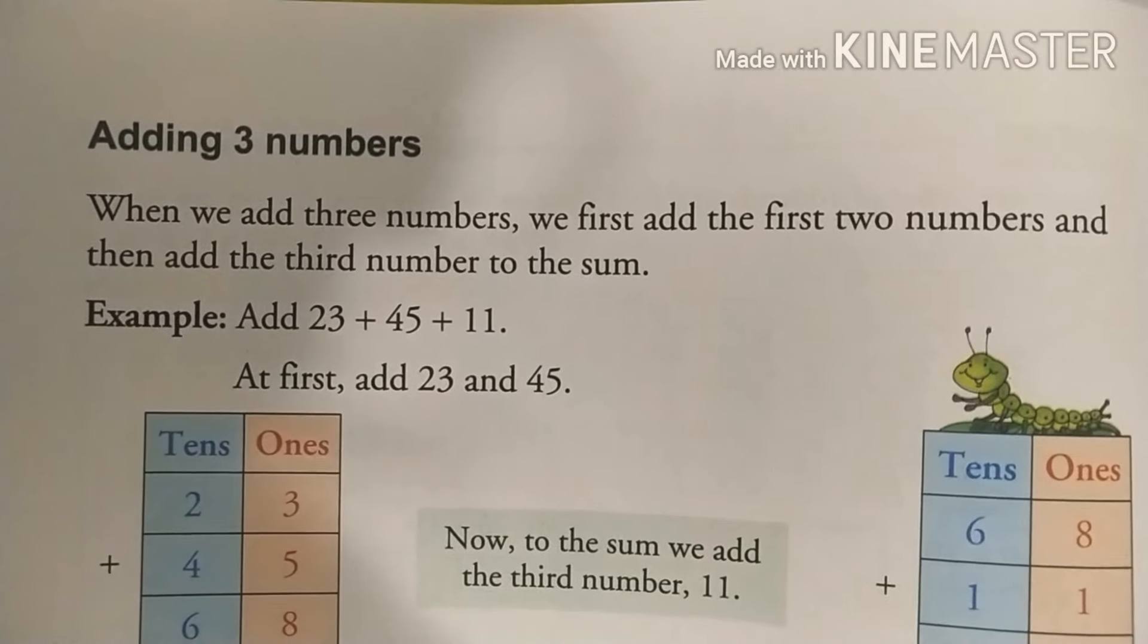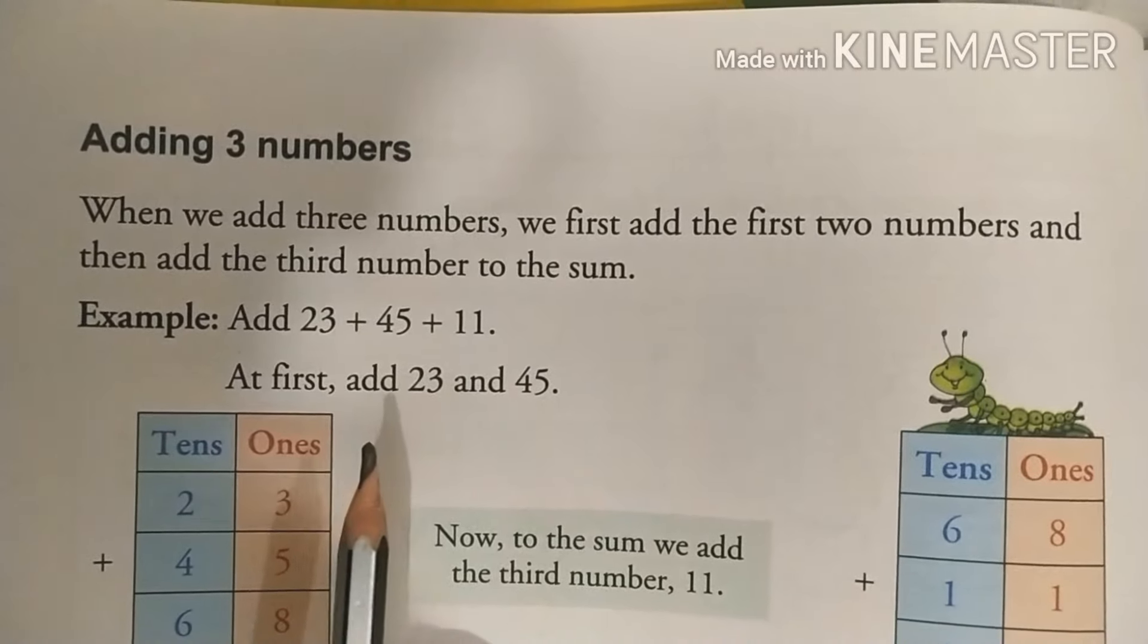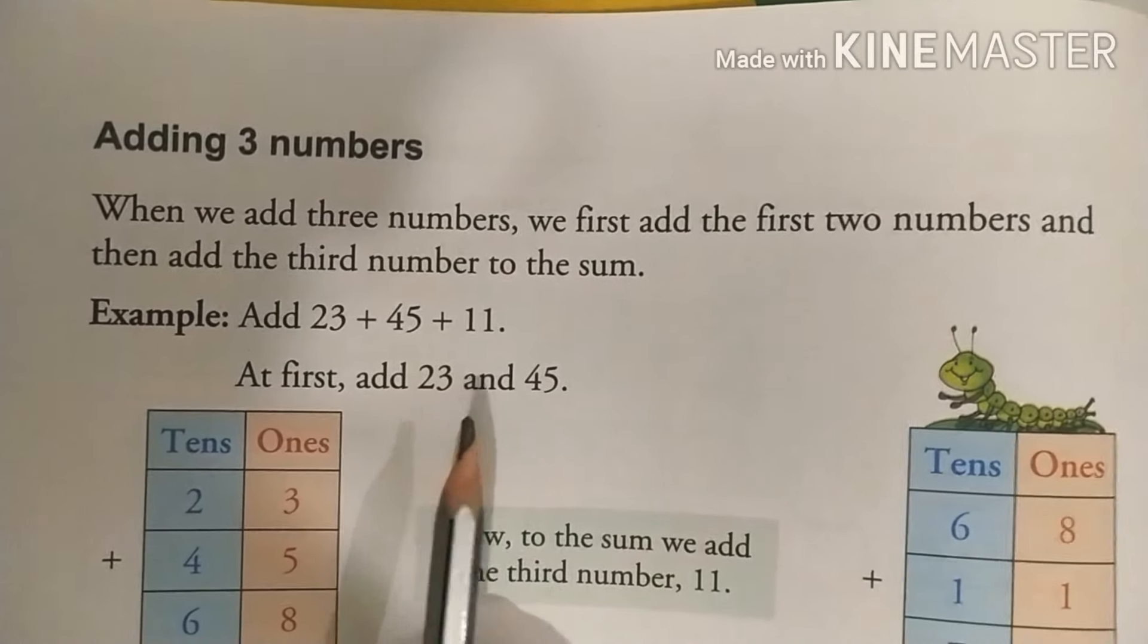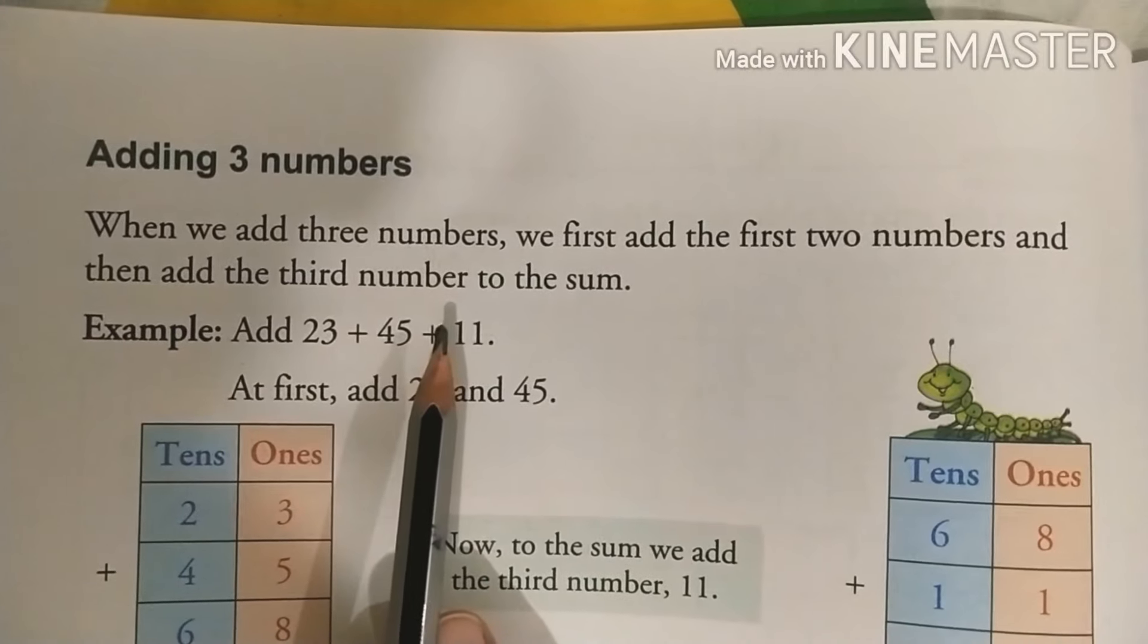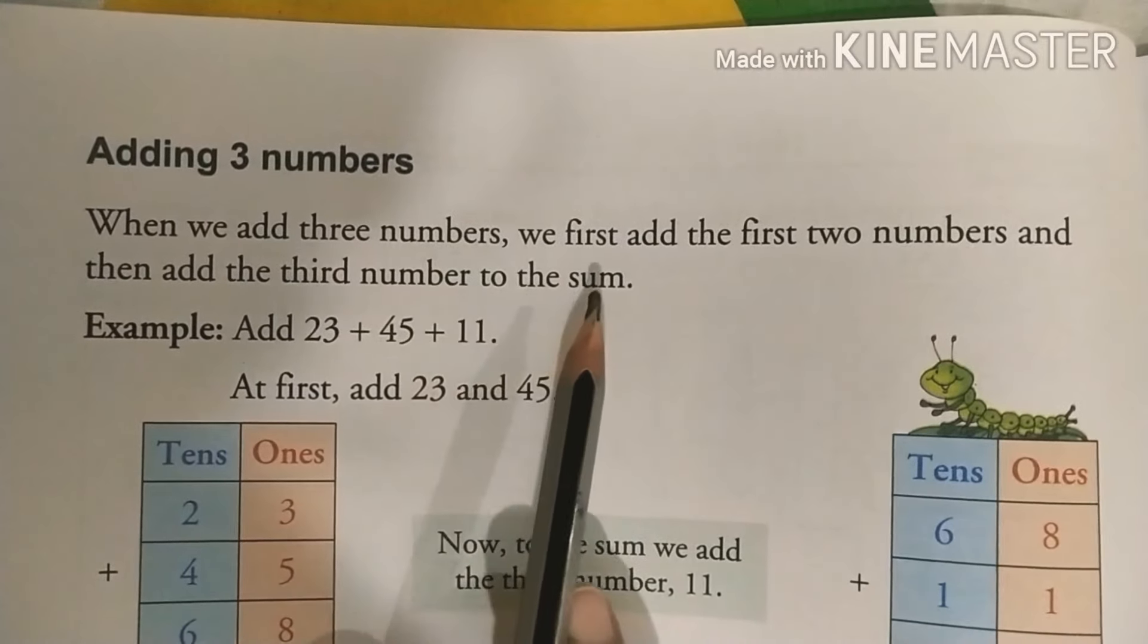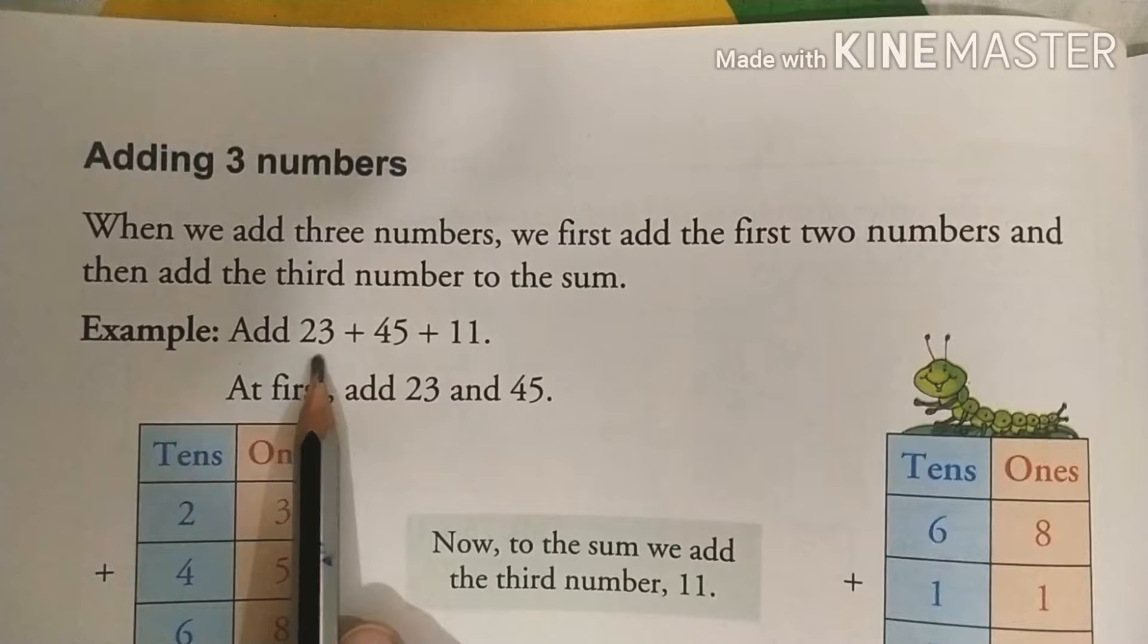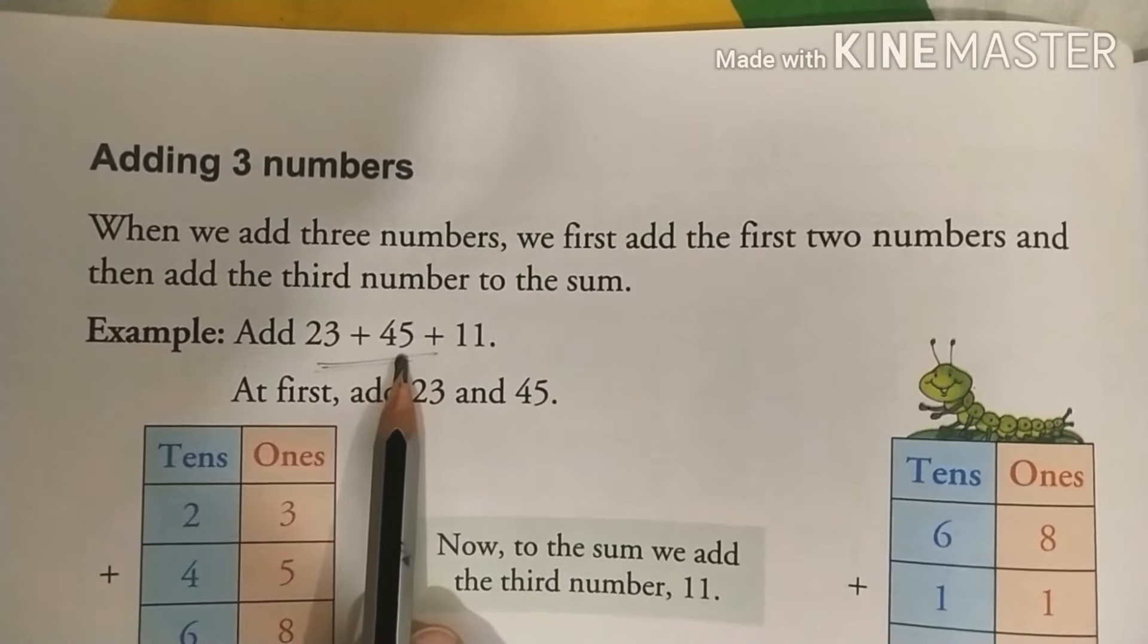Here you can see the example, add 23 plus 45 plus 11. Jab bhi hamein 3 numbers ko add karte hain, to first of all hum kya karte hain, 2 numbers ko ek saath add karte hain.